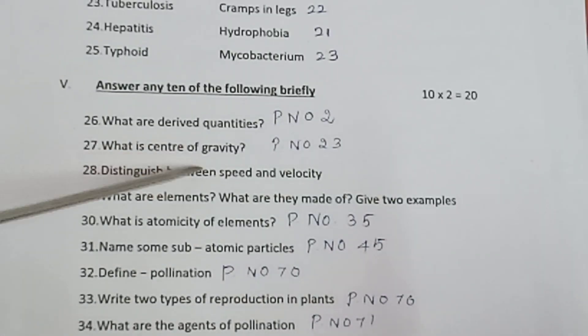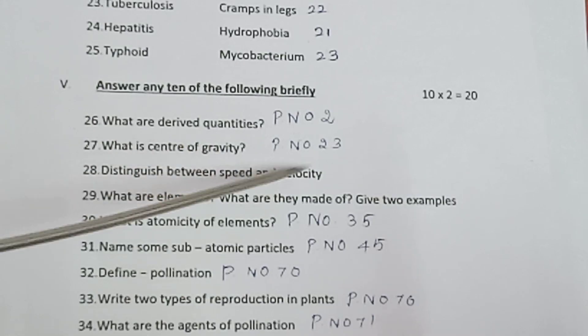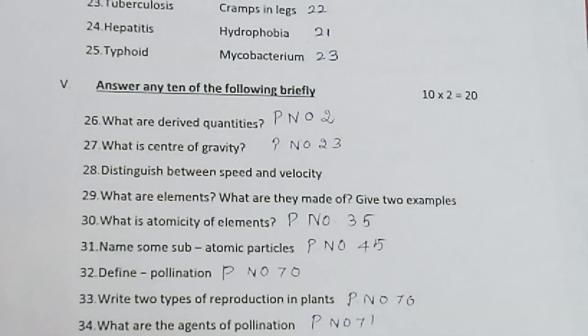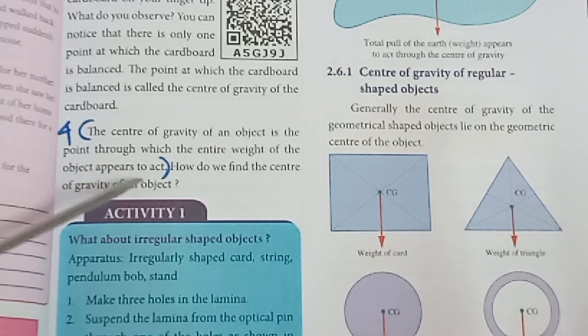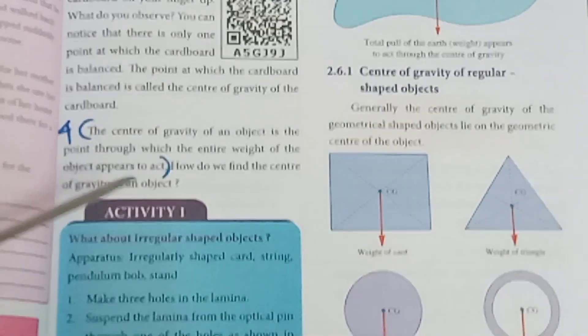Question 27: What is center of gravity? Refer to page number 23. The center of gravity is the point where the entire weight of an object appears to act.